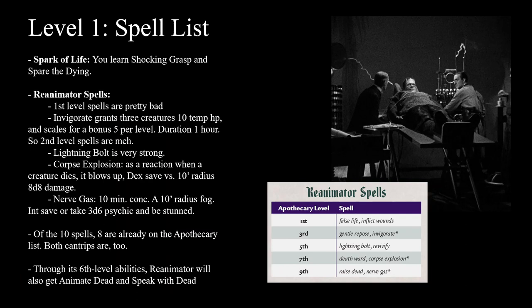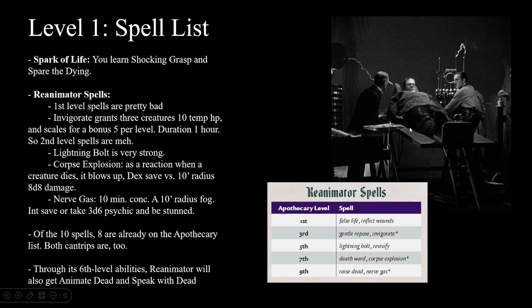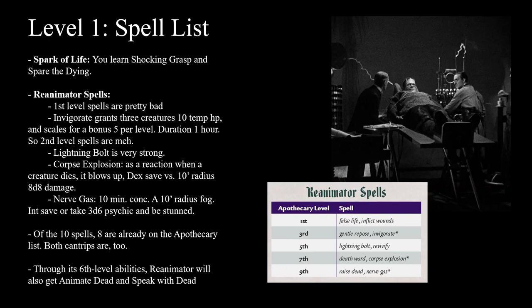For the spell list, at 6th level you get Animate Dead once per day and Speak with Dead once per short rest. At 1st level you get Shocking Grasp and Spare the Dying. Looking at the 10 spells, 2 cantrips, and 2 bonus spells — 14 spells total — 11 of them are already on the Apothecary list. It's a strong list, think of them as free preparations. The most notable is Lightning Bolt, which works great with Apothecary casting. At 5th level you could throw out 6 Lightning Bolts in one day across two short rests, tearing through opponents while healing your own creature.